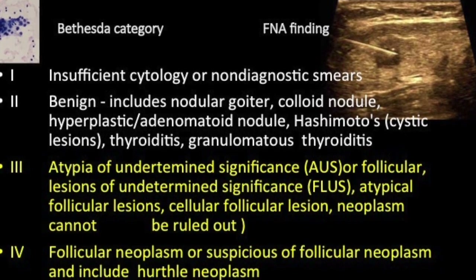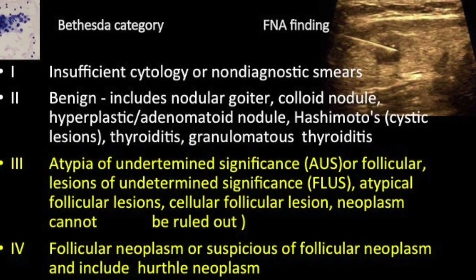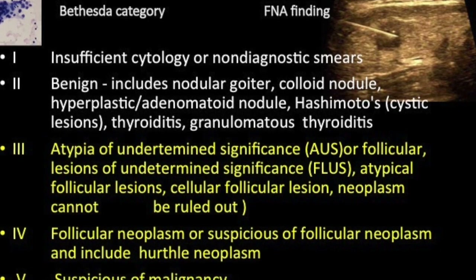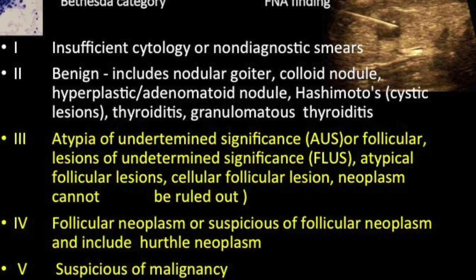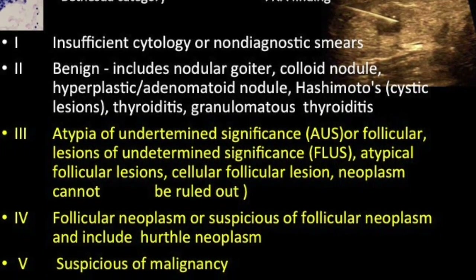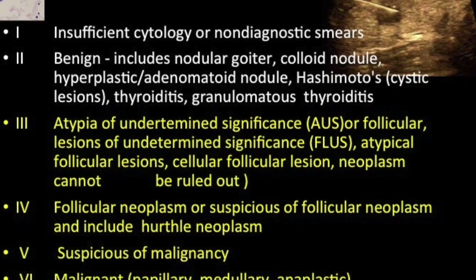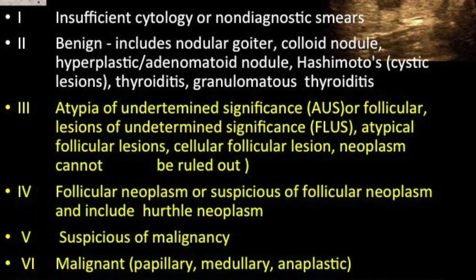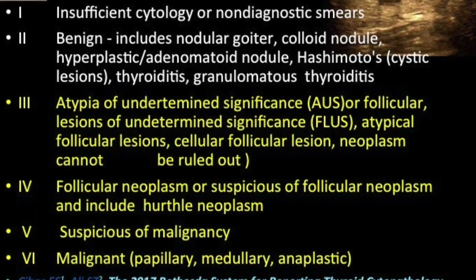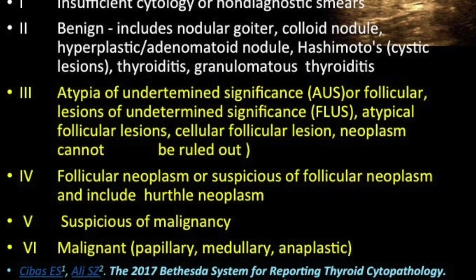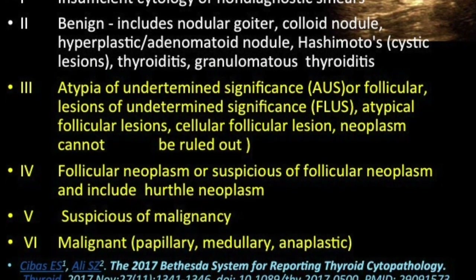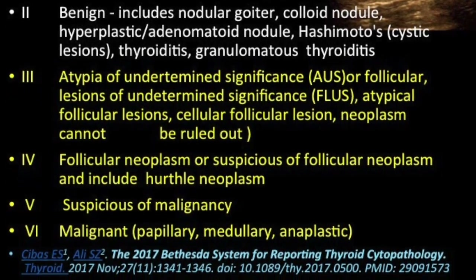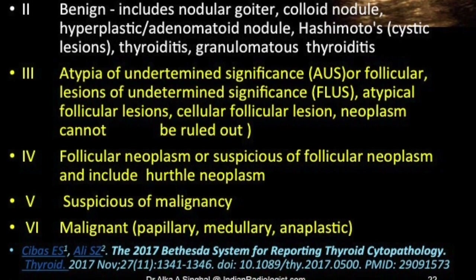A brief note on Bethesda FNAC categories: Bethesda 1 is insufficient, 2 is benign, 3 is AUS — atypia of undetermined significance — or intermediate lesions where follicular neoplasm cannot be excluded, 4 is follicular neoplasm including Hürthle cell neoplasm, 5 is suspicious for malignancy, and 6 is malignant — papillary, medullary, or anaplastic.